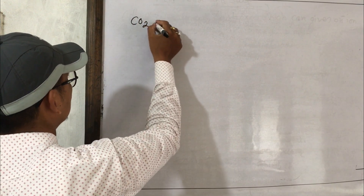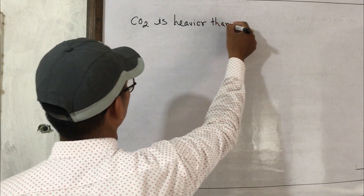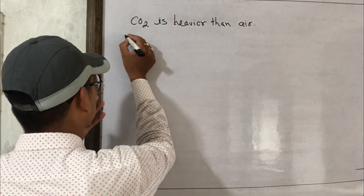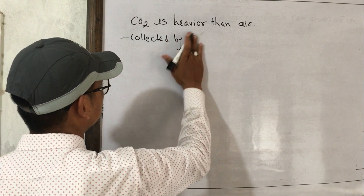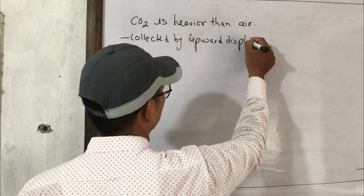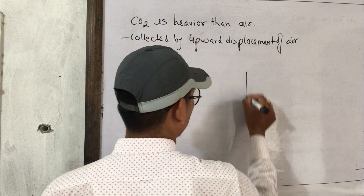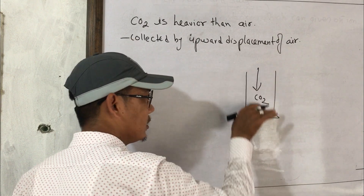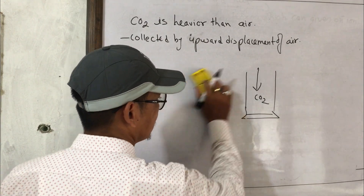CO₂ gas is heavier than air. Therefore it is collected by upward displacement of air. Because CO₂ is denser than air, it sinks and is collected by upward displacement of air.